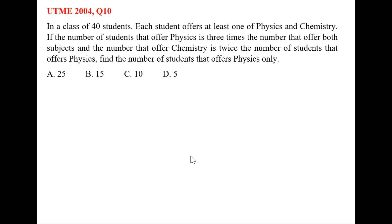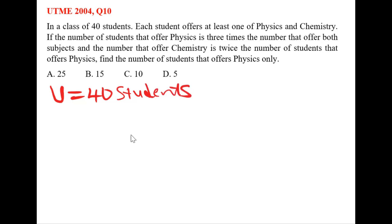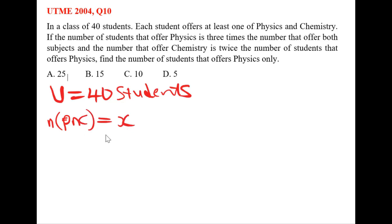First of all, let's put down our parameters. The universal set U is equal to 40 students. We'll use C to represent chemistry and P to represent physics. The number of those that offer both subjects — the physics intersection chemistry — is unknown, so let's assume it to be x.